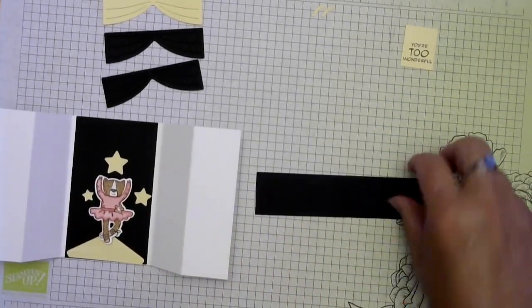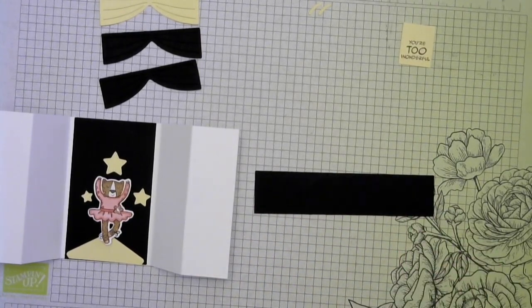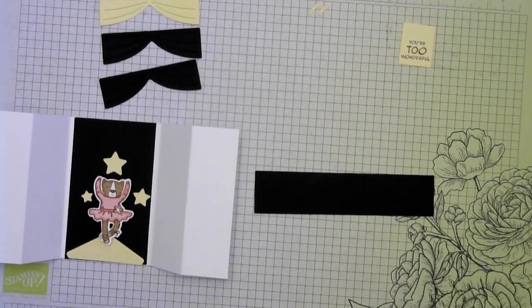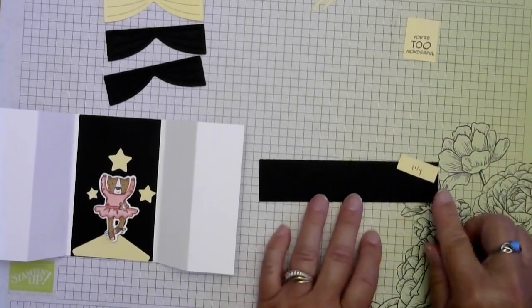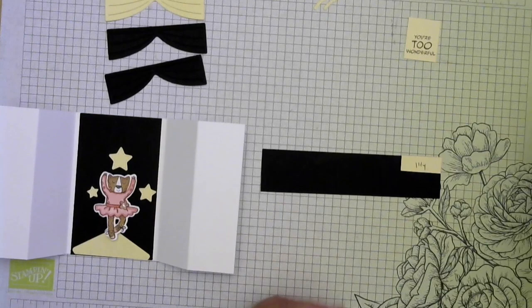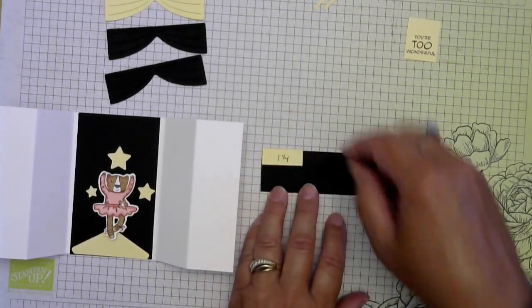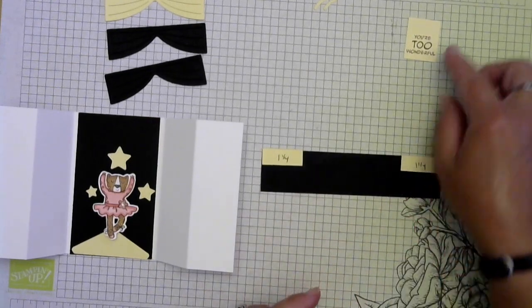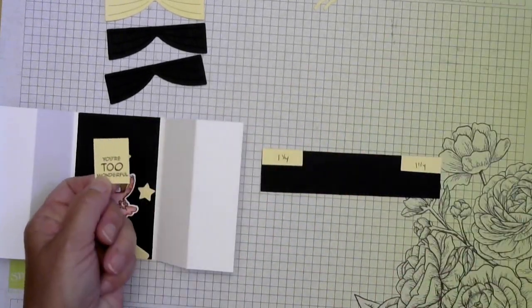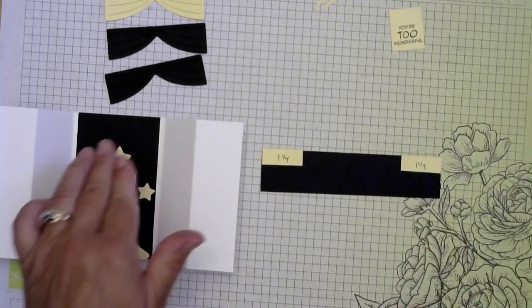And then for our curtain on the top what I've done is I've made myself two little, these are one and a quarter inch pieces. And I just did this so that I could center my little cut. And I did this so that my greeting would be not quite so far down and I could see more of my girl.